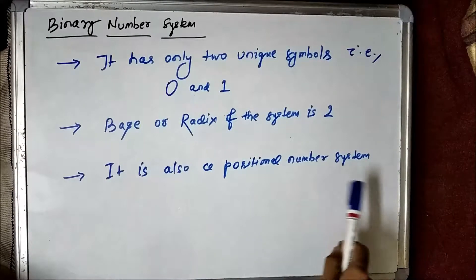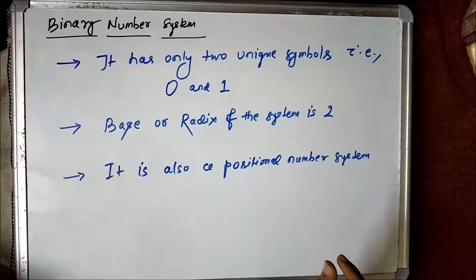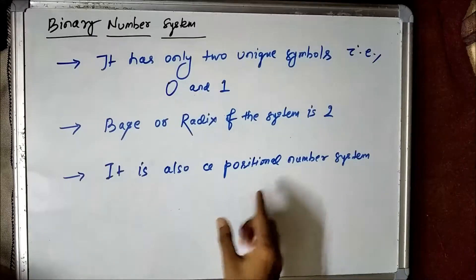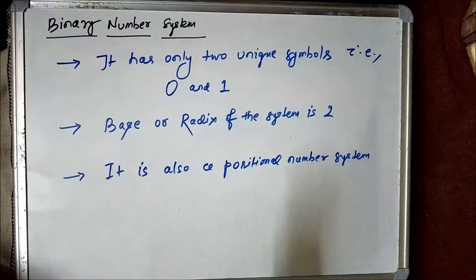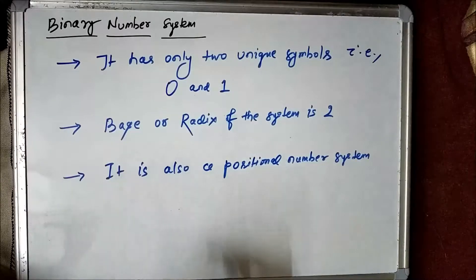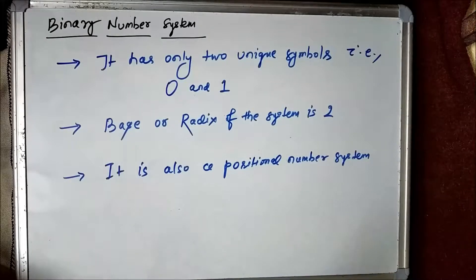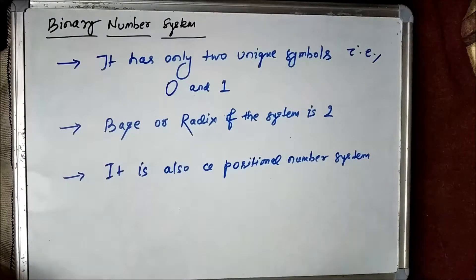The binary number system is also a positional number system, and each position has a certain weight associated with it. It is similar to the decimal number system in that respect. The difference is that here only two unique symbols are present, whereas in decimal, 10 symbols are used. The base or radix here is 2, while the radix of the decimal number system is 10. Let us see how the binary number system works by taking a few examples.